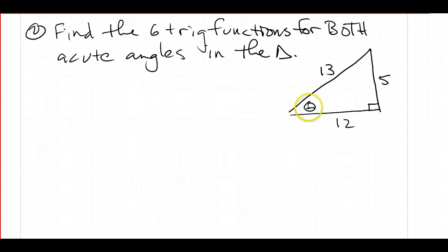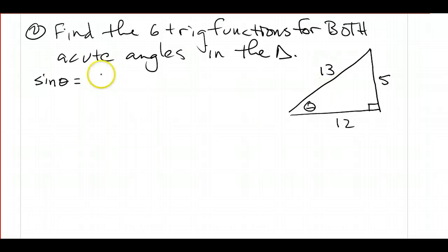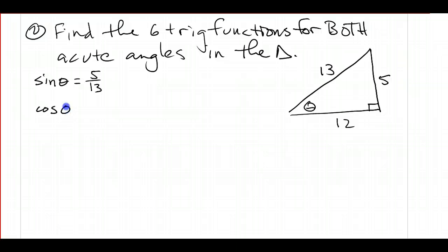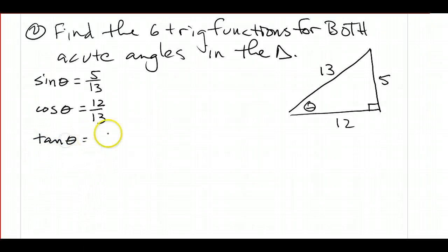Let's go ahead and find the six trig functions for theta. I'm just going to make a list of them here. The sine of theta — remember that's opposite over hypotenuse — so that's 5 over 13. The cosine of theta is adjacent over hypotenuse, so that's 12 over 13. And the tangent of theta is equal to sine over cosine, or opposite over adjacent, so that's 5 over 12.